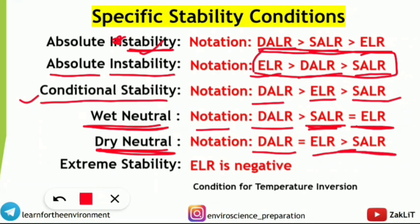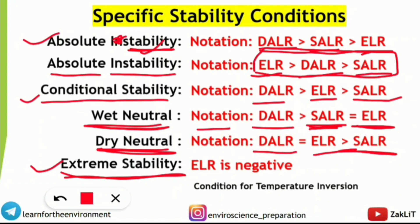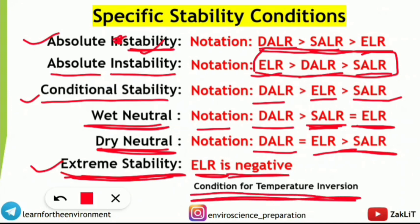Don't confuse absolute stability with extreme stability. Extreme stability means the Environmental Lapse Rate is negative, which gives the condition for temperature inversion — when moving upward, temperature increases. That is the case when ELR is negative. Absolute stability means DALR is highest, followed by SALR, then ELR. Make a table of all these conditions — it is very very important.